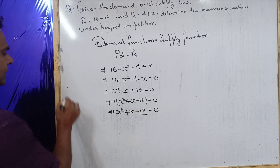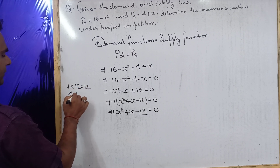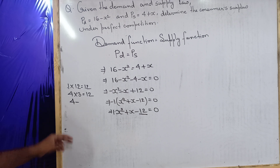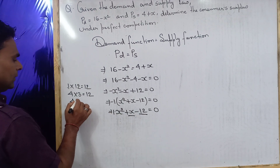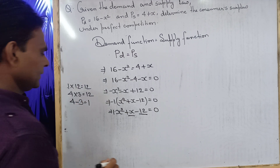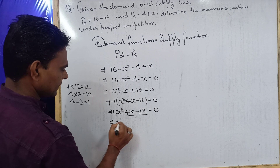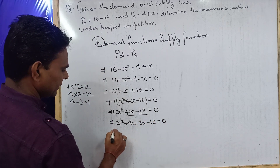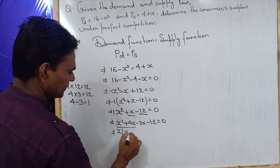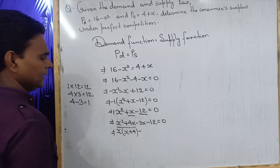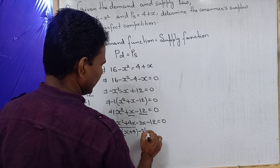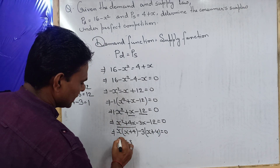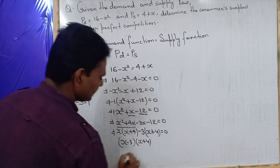Here c is 12. Multiplying a and c: 1 into 12 equals 12. Factorizing 12: 4 into 3 equals 12, and 4 minus 3 equals 1, which gives us the middle coefficient. So we get: x squared plus 4x minus 3x minus 12 equals 0. Taking x common from the first two terms gives x(x plus 4), and taking minus 3 common from the last two terms gives minus 3(x plus 4).